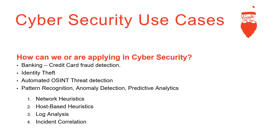Same thing with logs — we could feed a model a bunch of bad logs, and based upon that, it could find statistically high variations of abnormal logs to help an analyst quickly identify bad activity. And with incident correlation, if you have a framework like The Hive, you could feed a machine learning model indicators of compromise — like IP addresses or user agent strings — based on years of incidents, and train it to predictively surface new threats.